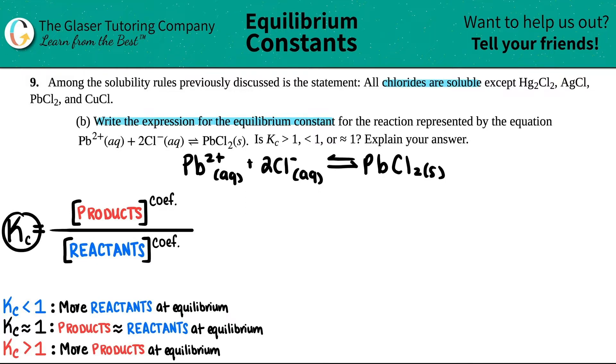So our Kc value, this is our equilibrium constant, is just products divided by reactants. So in this case, I'm just going to say Kc equals something. It's got to be something over something, right? Products over reactants.